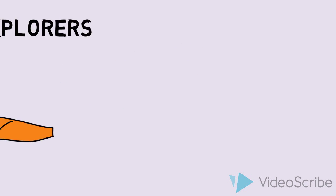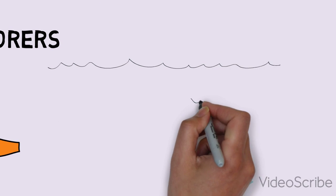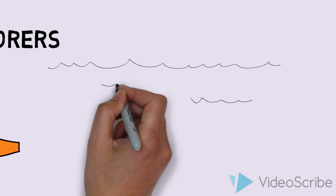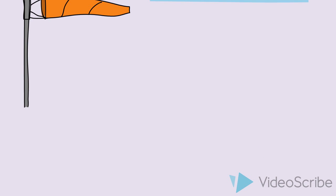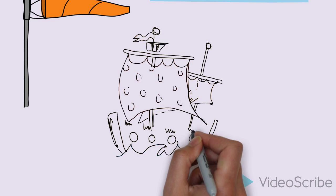They would also rely on water currents, so their boat would just follow the wind or follow the currents to the areas that they needed to travel to. And here you can see an example of an old-timey explorer boat.